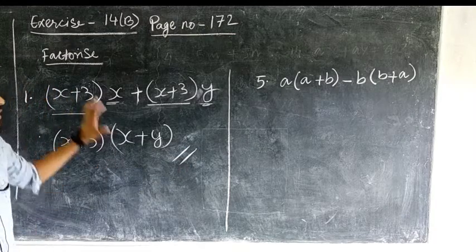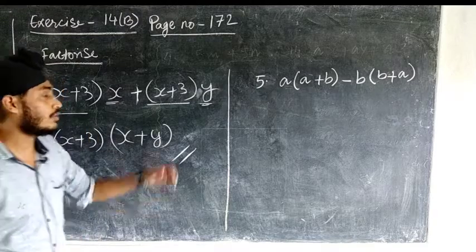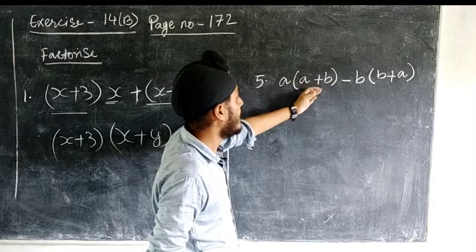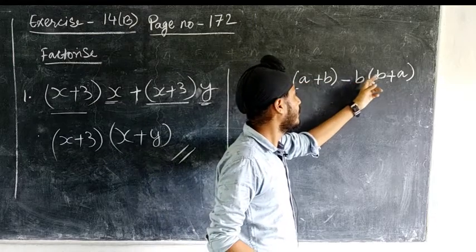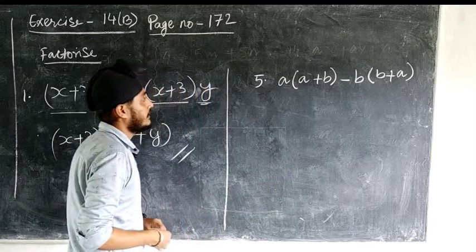This way, factorization of this kind of expression is done. Now, let us see another question, question number 5. It is given here: a into (a+b) minus b into (b+a). How to factorize this expression?